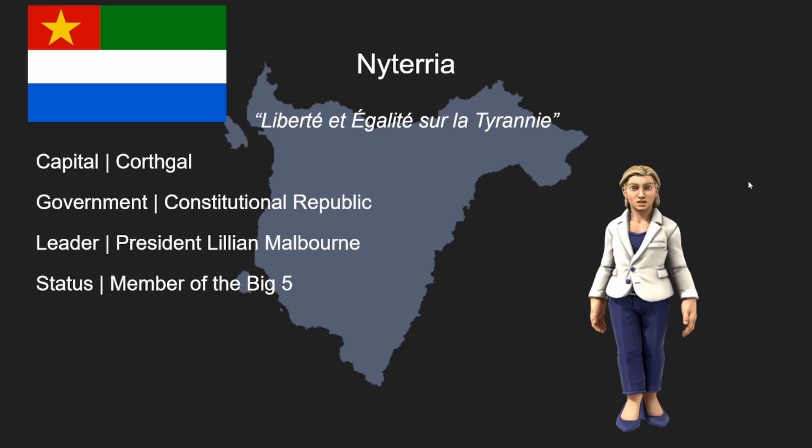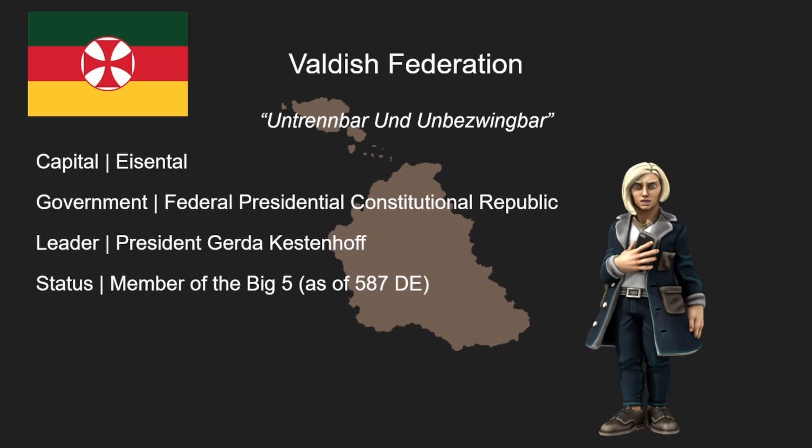Now let's talk about their neighbors to the north, the Walders Federation. The Walders Federation's motto, translated from Walders, is 'inseparable and indomitable.' The president, Gerda Kestetov, is both the head of state and government — more akin to what you might be familiar with in the United States, where the president holds executive power despite being democratically elected.